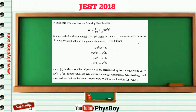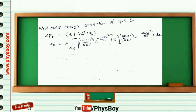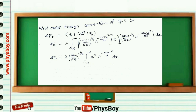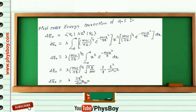I am going to find the first-order energy correction for the ground state from time-independent perturbation theory. Delta-E0 equals the expectation value of lambda x to the power 4 in state psi-0. Substituting the ground state wave function we must evaluate a Gaussian-type integral. Using the general formula for this type of integration with n equal to 2 for the x to the power 4 term, after inserting the integration value we get delta-E0 equal to 3 lambda h-bar squared over 4 m-squared omega-squared.